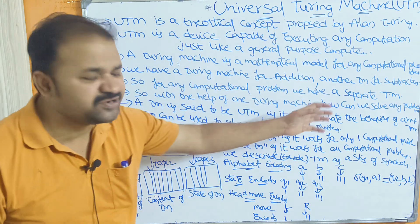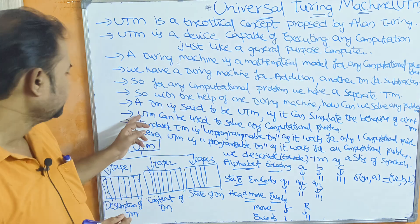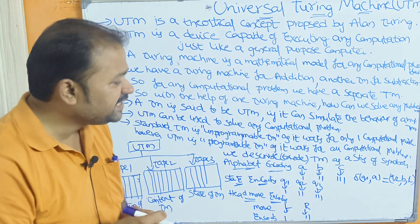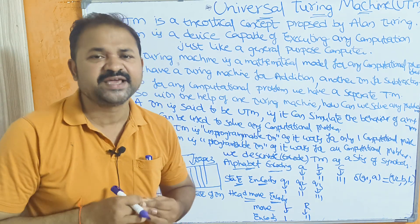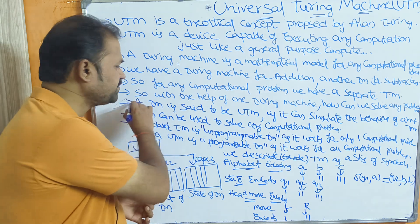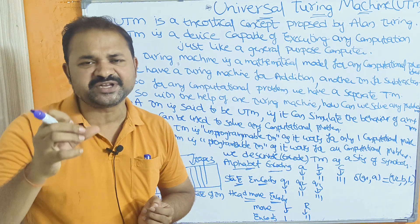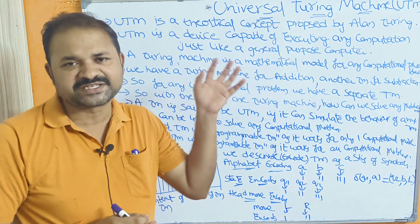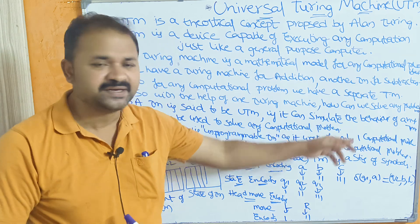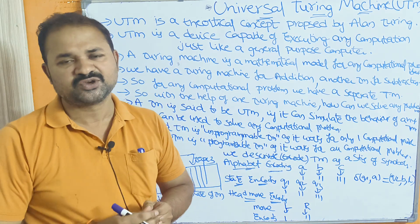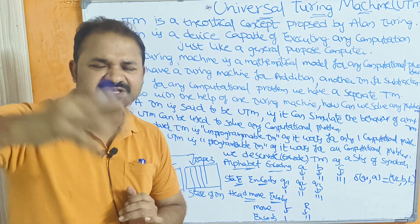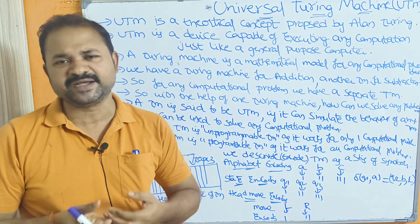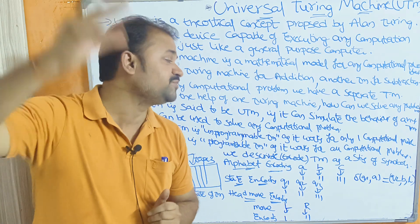That can be achieved by the Universal Turing Machine. A Turing Machine is said to be a Universal Turing Machine if it can simulate the behavior of any Turing Machine. This is a very important point. Universal Turing Machine can implement the behavior of any Turing Machine — it can perform addition, subtraction, and multiplication operations.